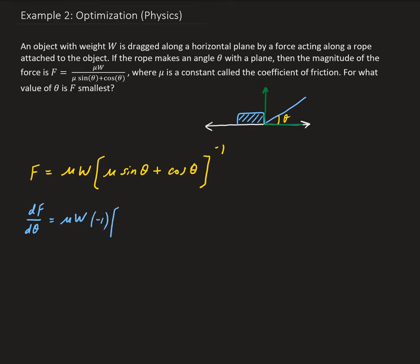We're going to bring down the negative one, so we'll have mu times sine theta plus cosine theta to the negative two. Then we take the derivative of the inside part with respect to theta — applying the power rule and then the chain rule.